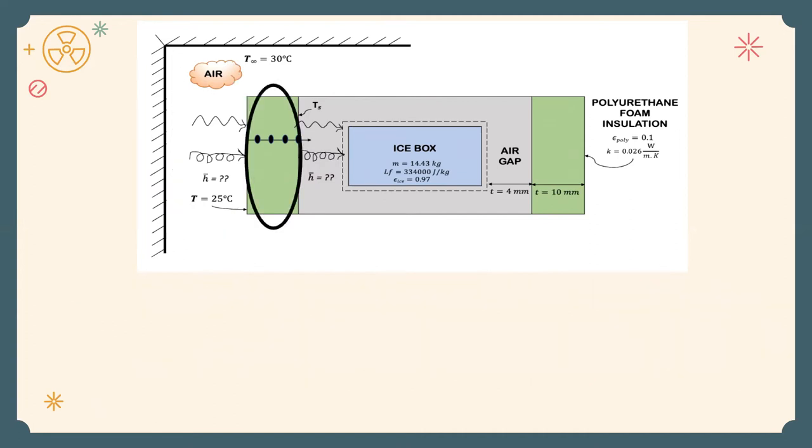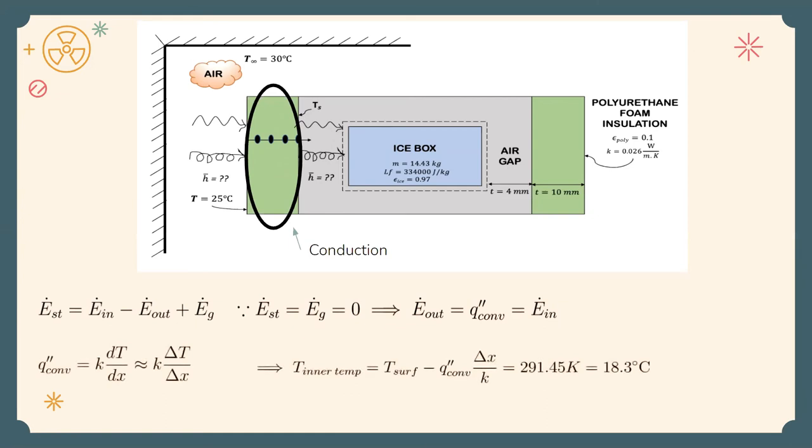Next we move our attention to the polyurethane coating, where the predominant mode of heat transfer will be conduction. We write an overall energy balance, and based on our assumptions that T-dot stored is equal to zero, we get our expressions. Then we write the basic expression for conduction and we get the inner surface temperature to be 18.3 degrees Celsius.